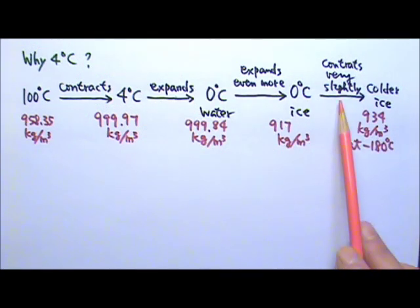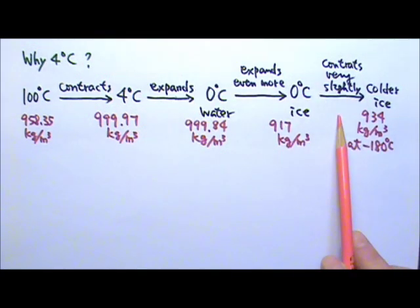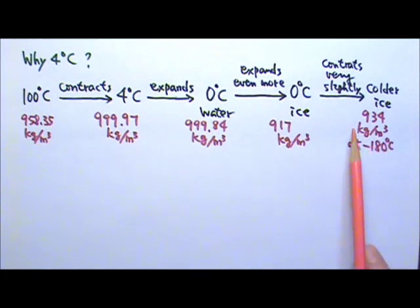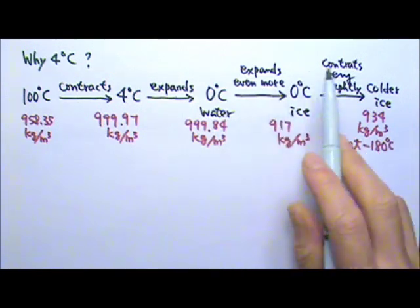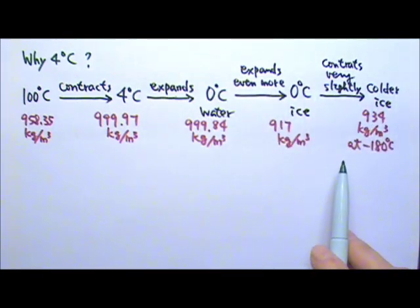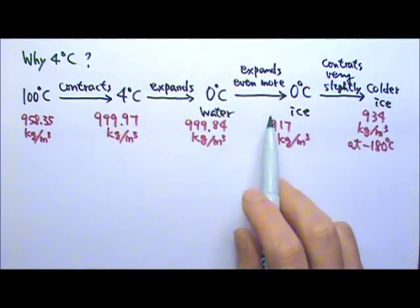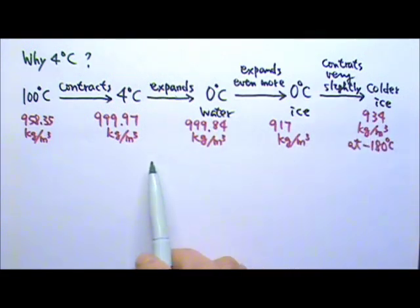And then only contracts very slightly when the temperature of ice goes down. That's why when you put ice cubes into your glass of room temperature water, the colder ice cubes would float. The colder ice is not as dense as the warmer water. And in a way, we're very lucky that water has this anomalous behavior.